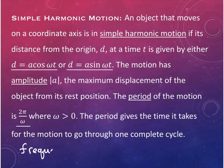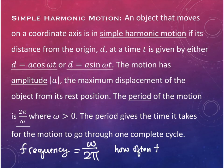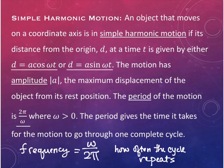Frequency is ω over 2π - it's how often the cycle repeats. The period and frequency are reciprocals of one another.